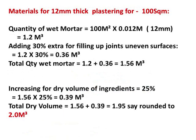Now we go straight into 12 mm thick plastering for 100 square meters. The quantity of wet mortar is 100 square meters multiplied by 12 mm (0.012 meters), which equals 1.2 cubic meters. We then add 30% extra for uneven surface makeup, which is 0.36 cubic meters additional.